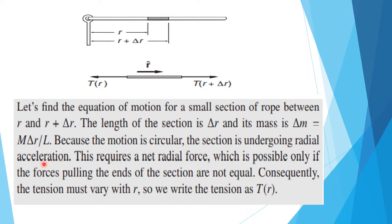Because the motion is circular, the section undergoes radial acceleration, so there will be a radial acceleration along the radial direction. This requires a net radial force, which is possible only if the forces pulling the ends of the section are not equal. There is a need of a net radial force along the radial direction to make this whirling possible, and consequently the tension must vary with r. We write the tension at r as T(r), and at r plus delta r the tension is T(r + delta r).